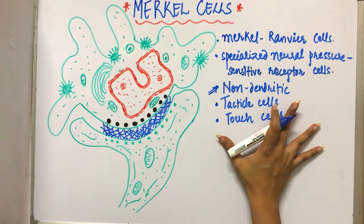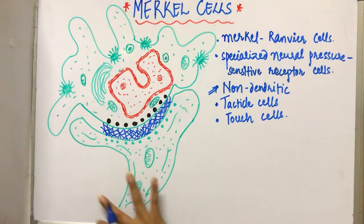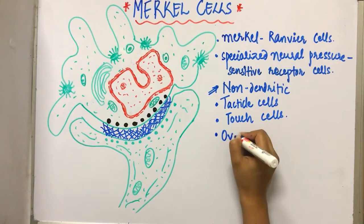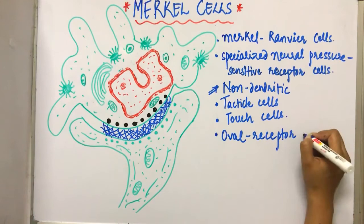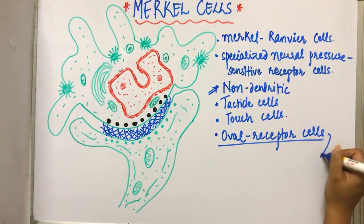What are these? These are the oval receptor cells that have synaptic contact with the somatosensory afferent. So these are oval-shaped receptor cells with synaptic contact.